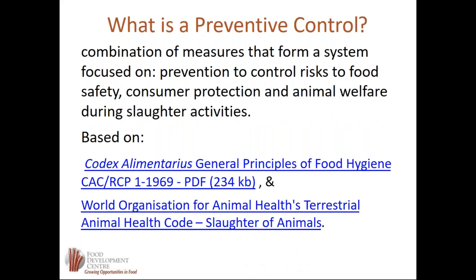Preventive controls are the equivalent of good manufacturing practices or prerequisite programs of a HACCP program. They are the programs and procedures that you have in place to control the hazards associated with the production of your products. Any hazard you don't control through a preventive control would then become a critical control point in your preventive control plan.